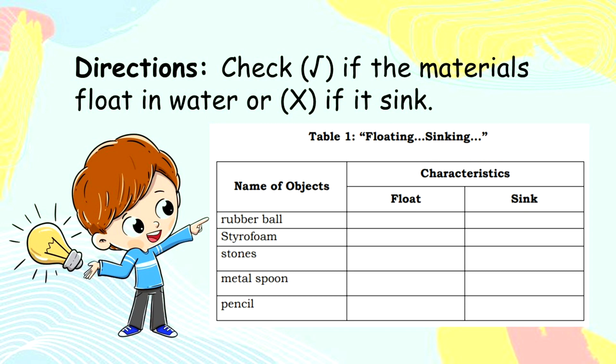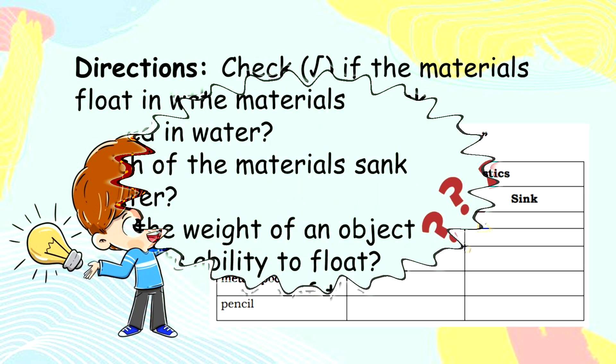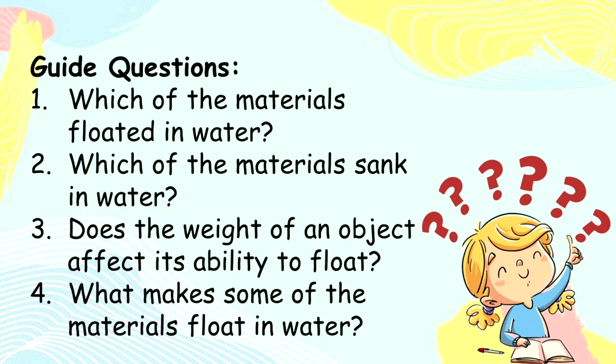Directions: check if the materials float in water, or cross if it sinks. Did you identify the characteristics of the materials in the activity? Now let's answer the guide questions. Question number one: which of the materials floated in water? Number two: which of the materials sunk in water? Number three: does the weight of an object affect its ability to float? Number four: what makes some of the materials float in water?